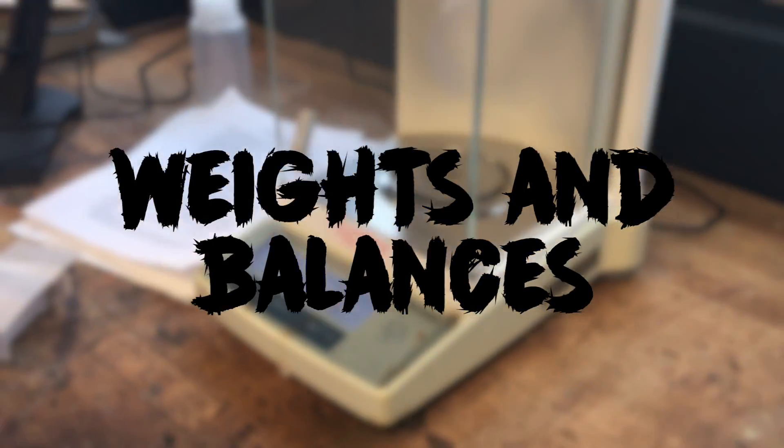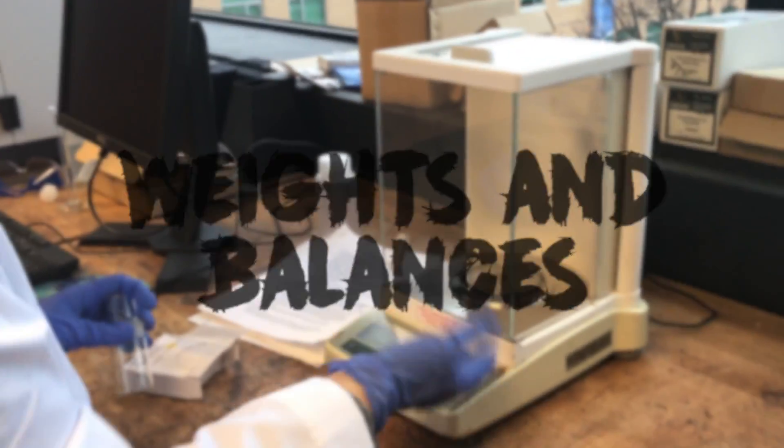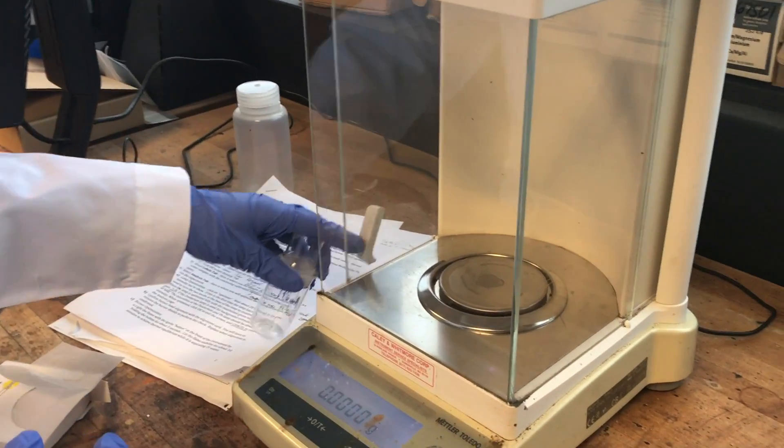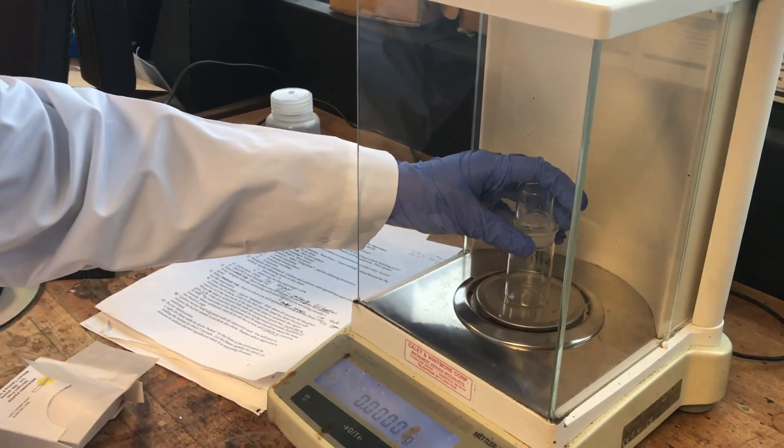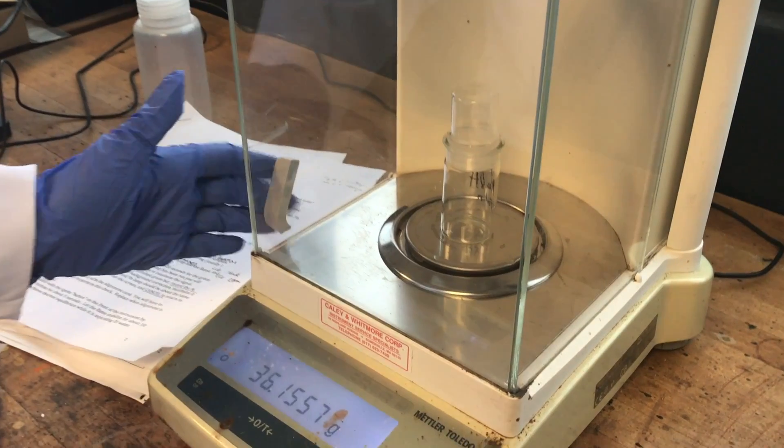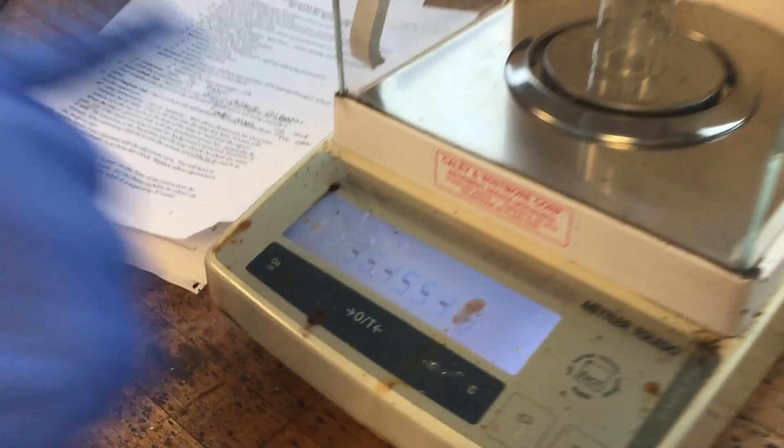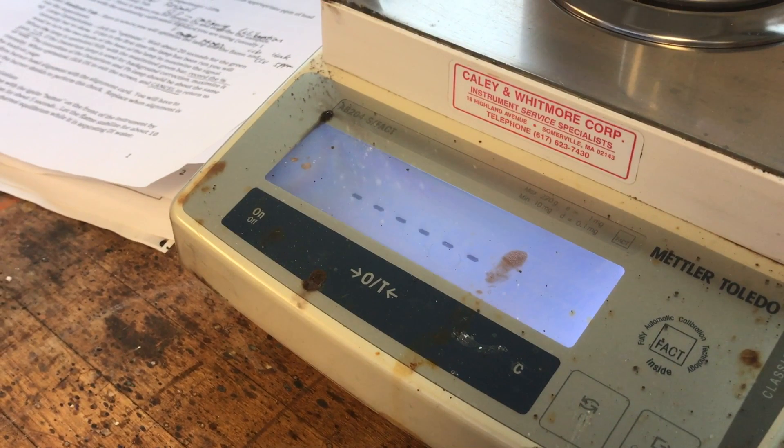And now we're going to go over how to use the analytical balance. Place the weighing apparatus on the scale and make sure the doors are shut tight. When weighing out any substance you must first tare the weigh bottle. You do this by pressing the O/T button on the middle of the balance.